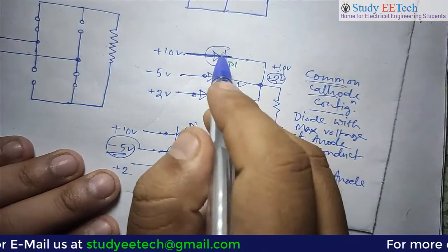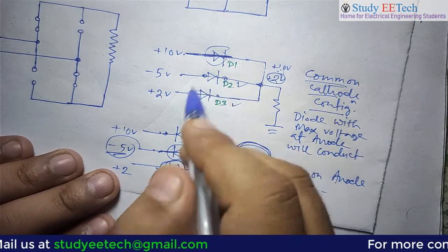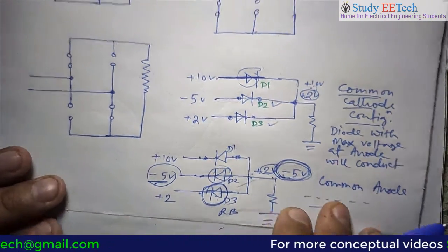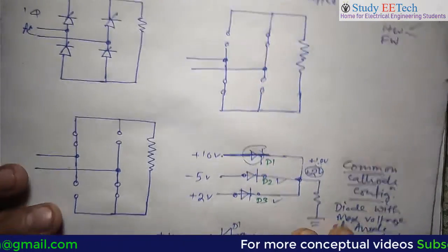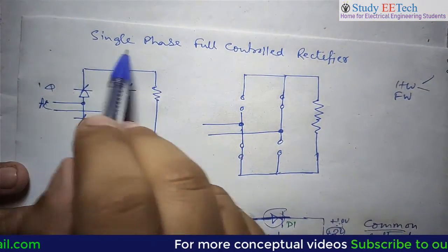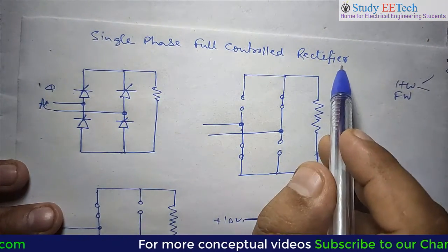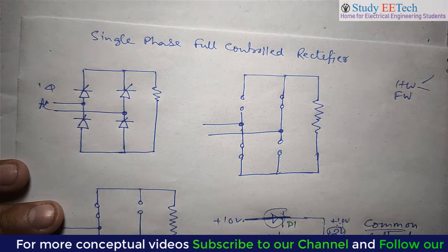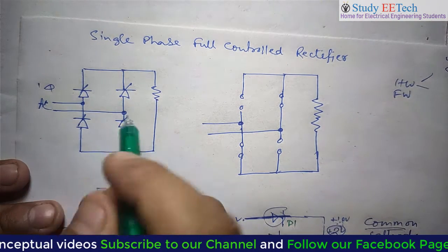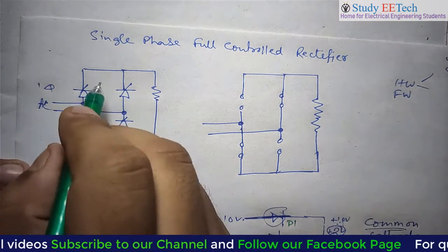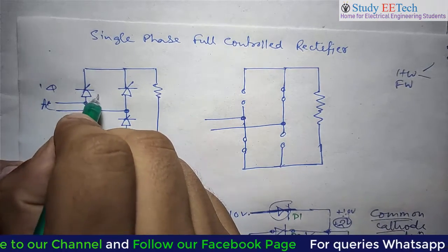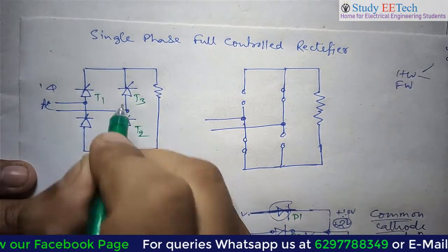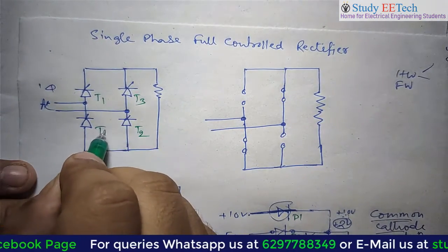This concept will help you to go through three-phase, single-phase, and all rectifier circuits. Now coming back to the single-phase full-controlled rectifier with resistive load. We have seen that the thyristors are connected in this way, and we are taking the names T1, T2, T3, T4.